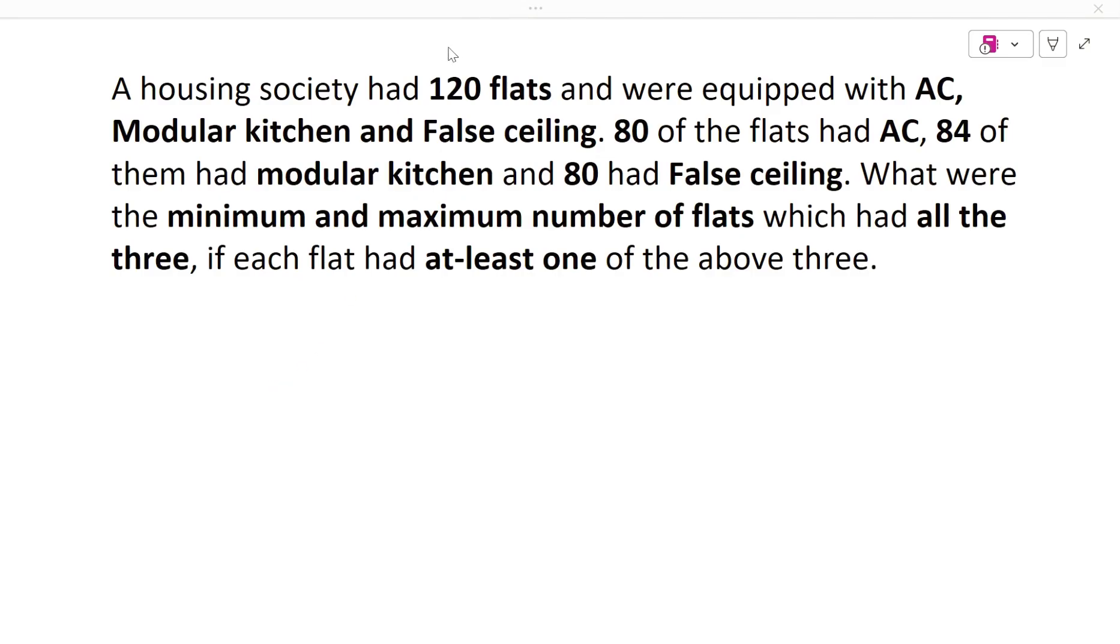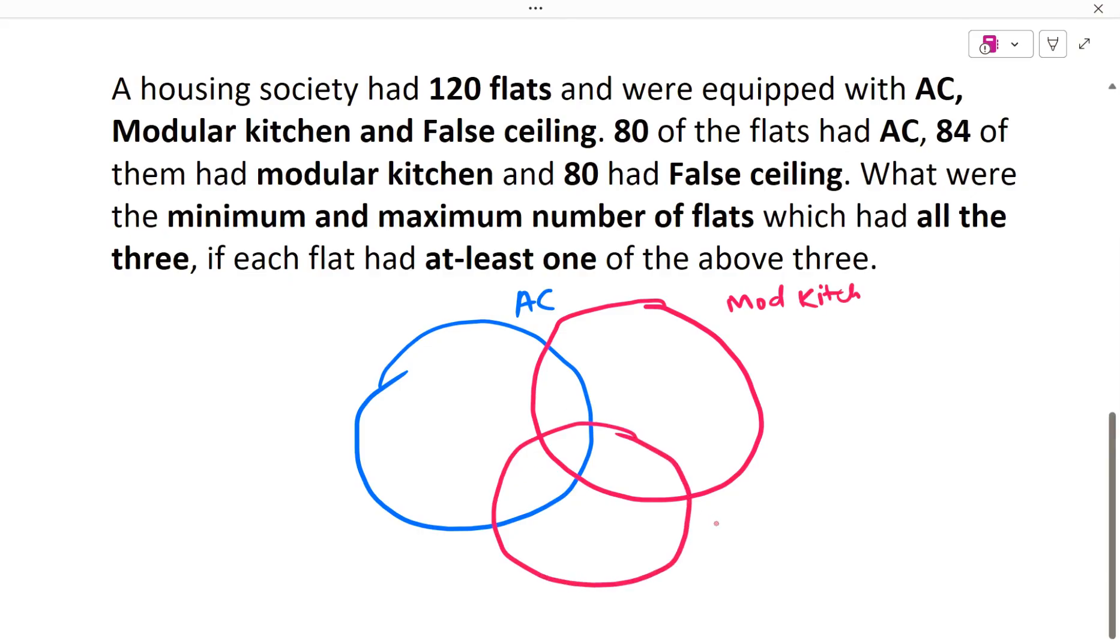So let us first make the Venn Diagram and let us solve this. Let us see this circle as AC, one of the circles I am taking as modular kitchen, this is my modular kitchen. And the third one I am taking as false ceiling, false ceiling.